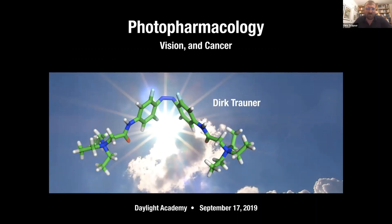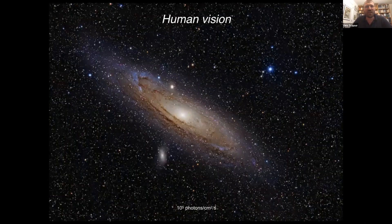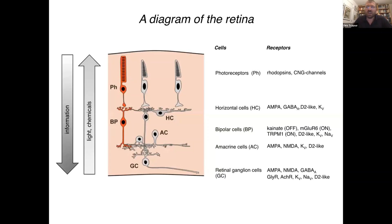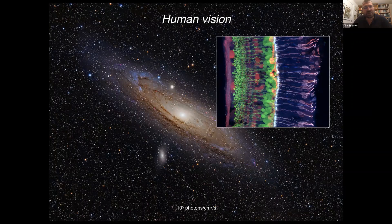Photochemistry is an absolutely amazing topic and as chemists we really love working on this. Just to illustrate how amazing daylight is — this is a picture of the Andromeda galaxy. The Andromeda galaxy is the furthest object that you can see with your unaided eye. It's about two and a half million light years away, which means that a photon from the center of the Andromeda galaxy travels for two and a half million years and then through the atmosphere, through your tear film, through your cornea, through your lens, and through your vitreous until it hits the retina, this light-responsive tissue, where the molecular chemistry is happening. And that happens at a ridiculously low intensity.